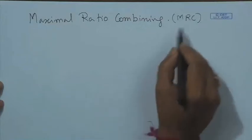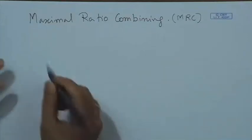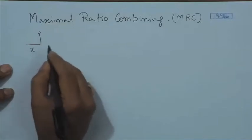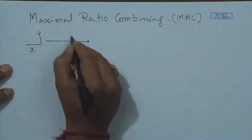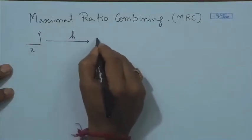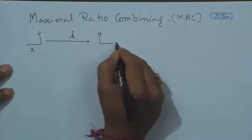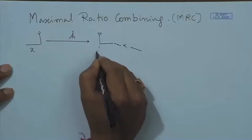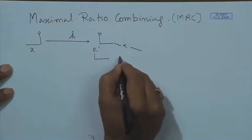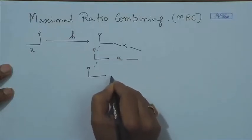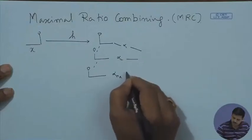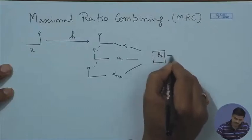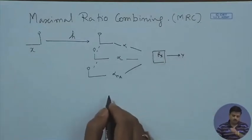MRC is the common name for this. Typically, x is transmitted over the channel which has coefficient h, received through one antenna weighted by a certain weight factor, the second antenna again weighted by a certain weight factor, and so on up to MR weighted by alpha_MR, and then there is some processing at the receiver.